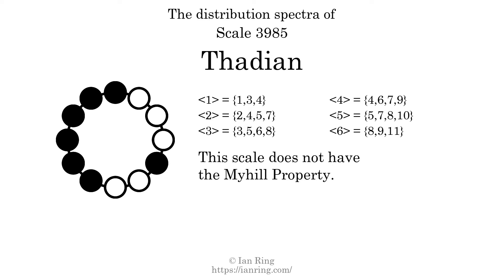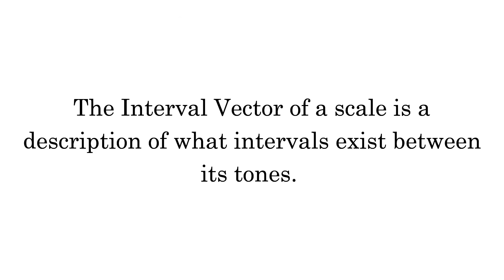If every spectrum has exactly 2 specific intervals, we call that the Myhill property. This scale does not have the Myhill property. Since the generic interval ranges overlap, this scale is an improper scale.